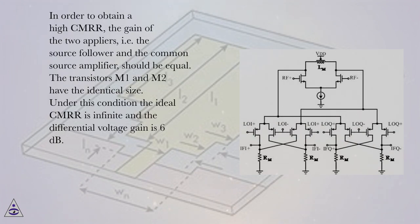In order to obtain a high CMRR, the gain of the two amplifiers, i.e. the source follower and the common source amplifier, should be equal. The transistors M1 and M2 have the identical size. Under this condition the ideal CMRR is infinite and the differential voltage gain is 6 dB.